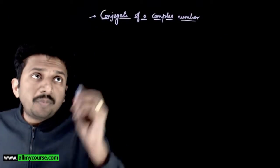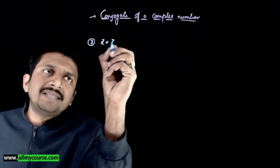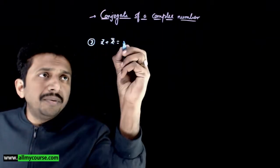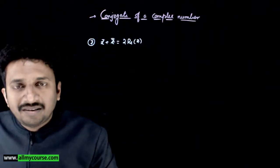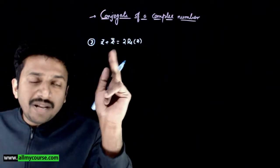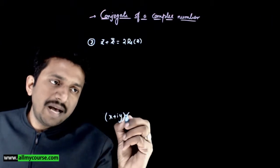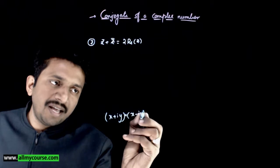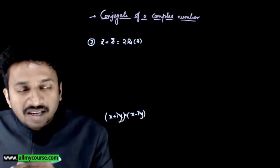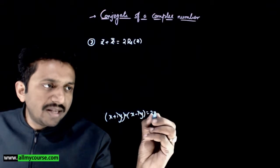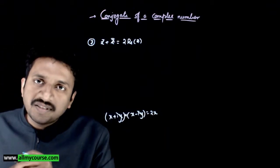The next property: z plus z bar gives you 2 times the real part of z. If z equals x plus iy and z bar equals x minus iy, adding these two cancels the iy and minus iy terms, giving 2x — that is, 2 times the real part of z.